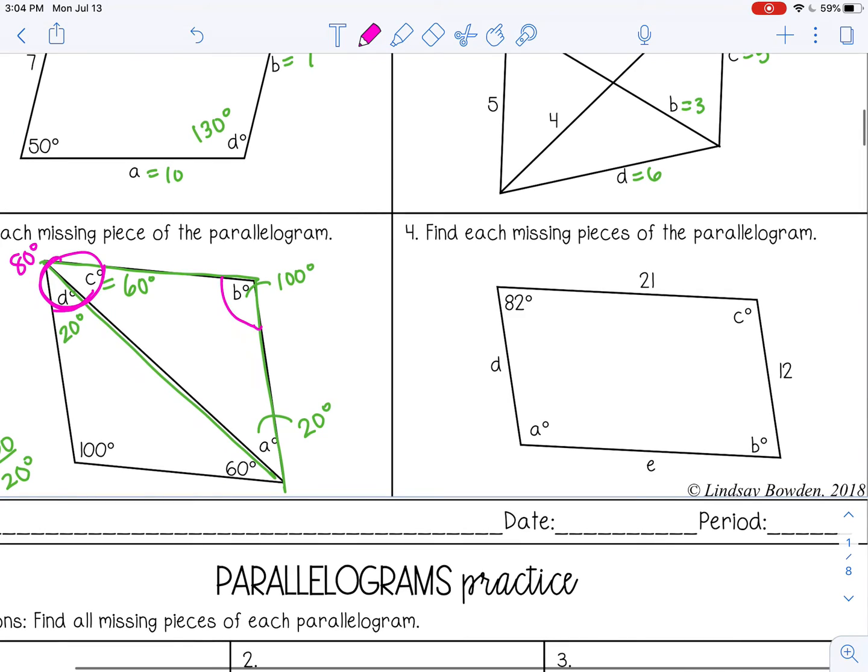All right, go ahead and pause the video now and try number four by yourself. All right, let's see how you did. So E is 21, D is 12, A is 82 degrees—sorry, B is 82 degrees, A is 98 degrees, and C is 98 degrees.